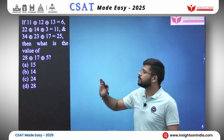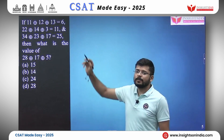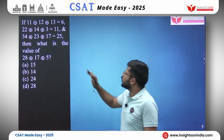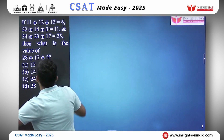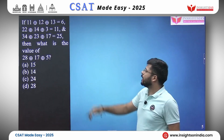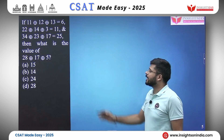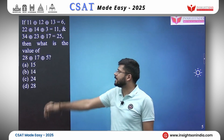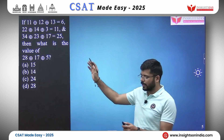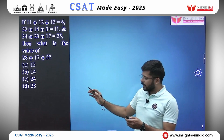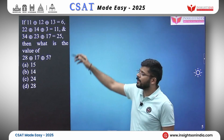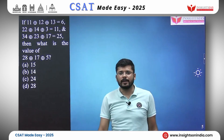The next question: 11, 12, and 13 give you 6; 22, 14, and 3 give you 11; 34, 23, and 17 give you 25. Then what is the value of 28, 17, and 5? They are the same numbers as the previous problem, however they are giving different results.